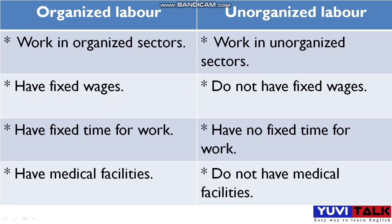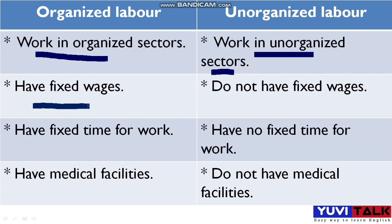The next question is: what is the difference between Organized Labor and Unorganized Labor? The first difference is that Organized Labor works in the organized sector, while Unorganized Labor works in the unorganized sector. The second difference is that Organized Labor has fixed wages, while Unorganized Labor does not have fixed wages — sometimes they get more and sometimes less.